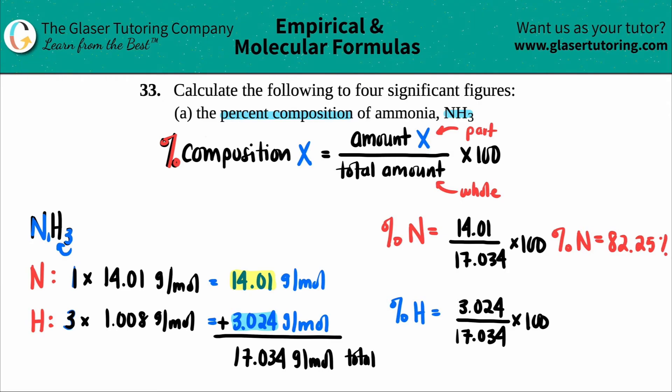And if you want to do hydrogen, we have this, but you could also subtract from 100 since there's only two elements in the compound, they got to equal a total of 100. So that's always a good check just to make sure you did it right. So 3.024 divided by 17.034, and then times that by 100. So I got 17.75 with the four sig figs and that's it.